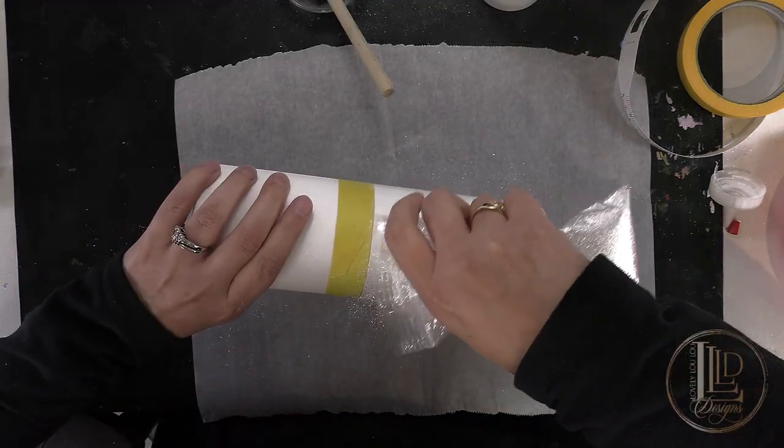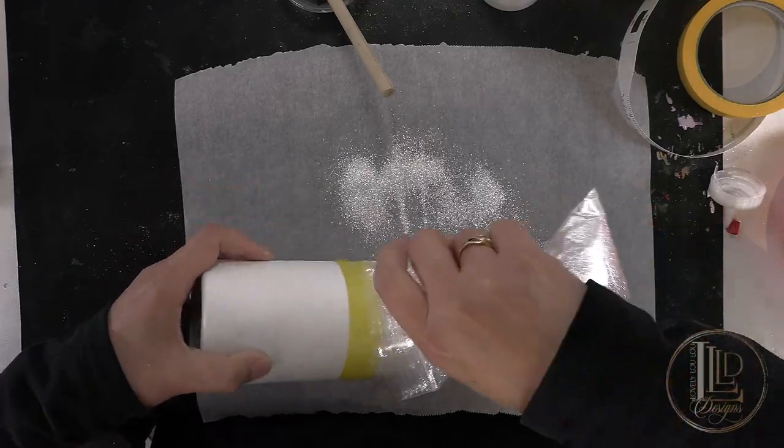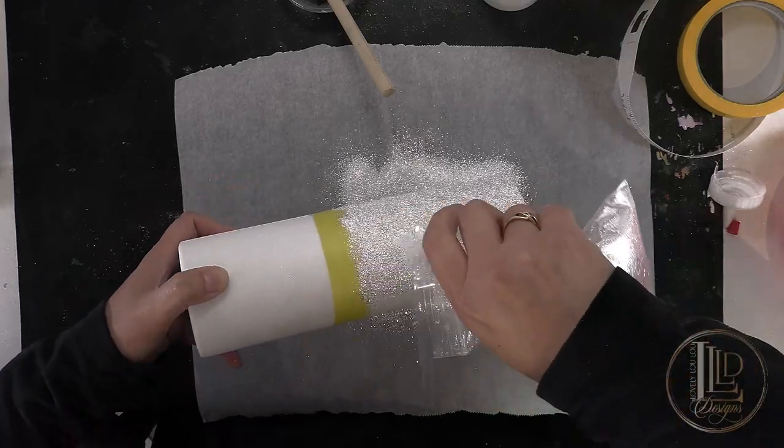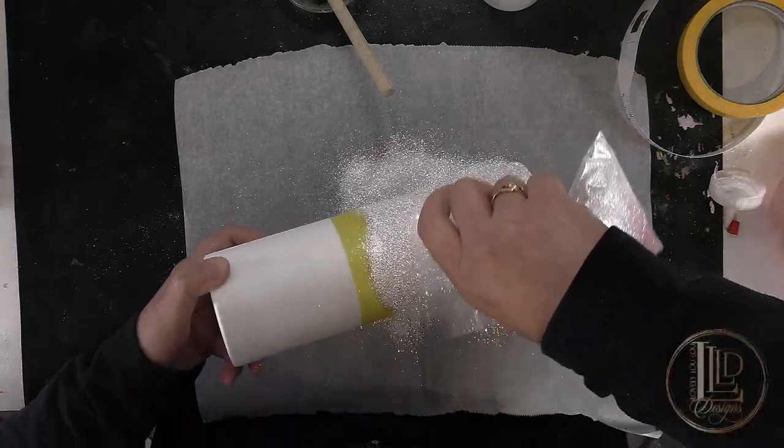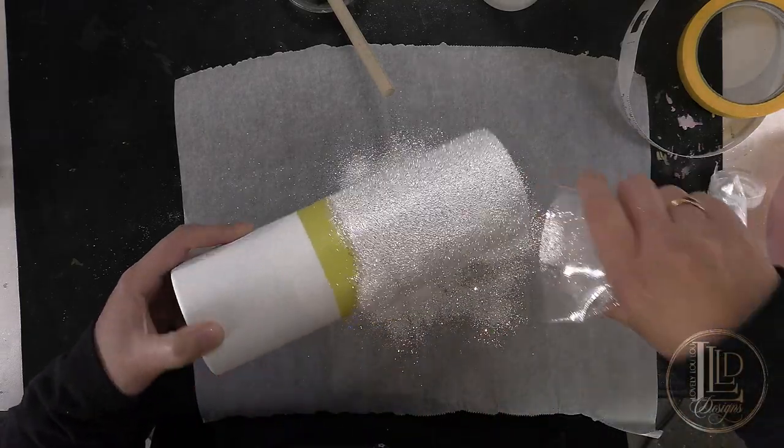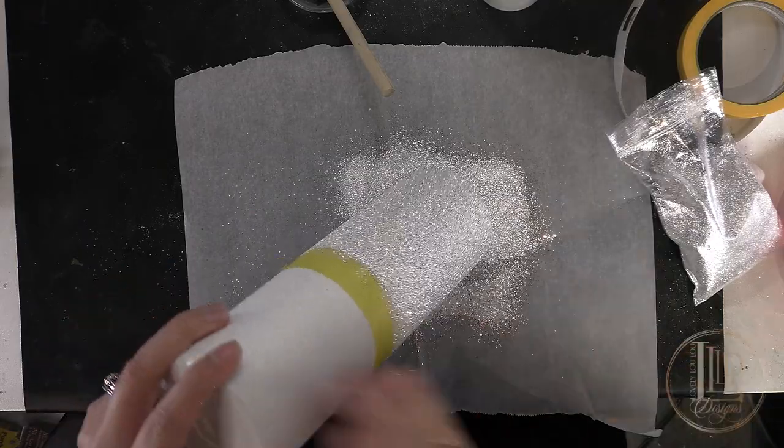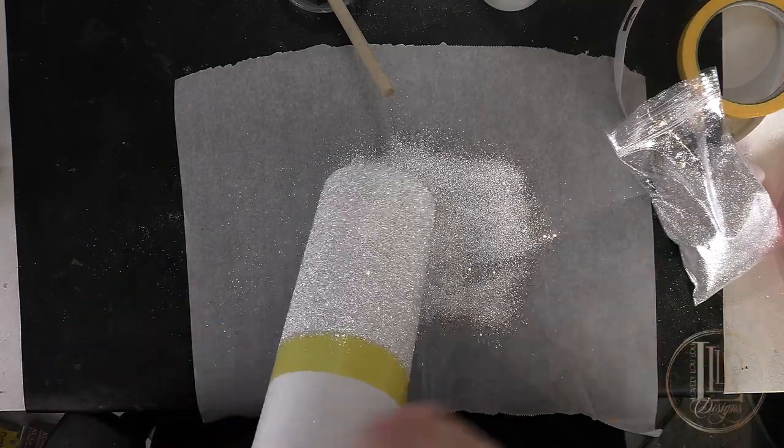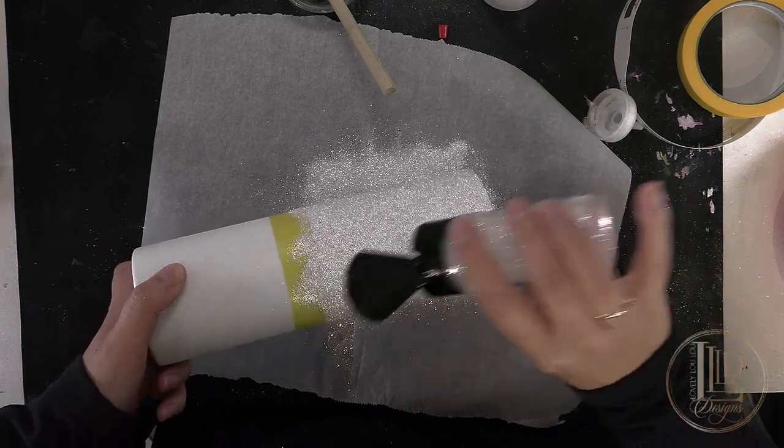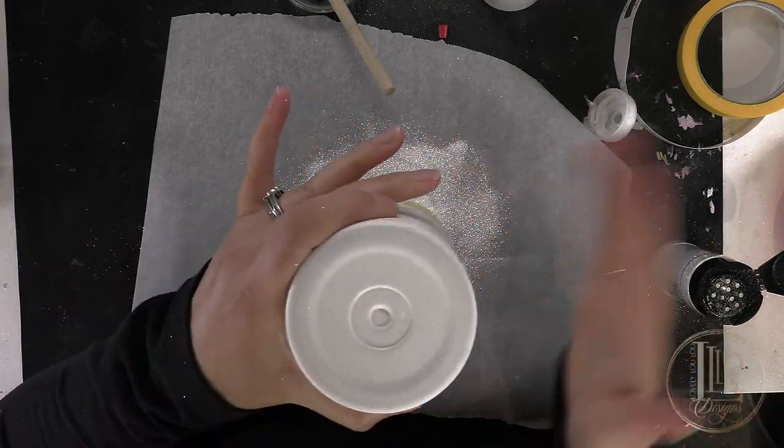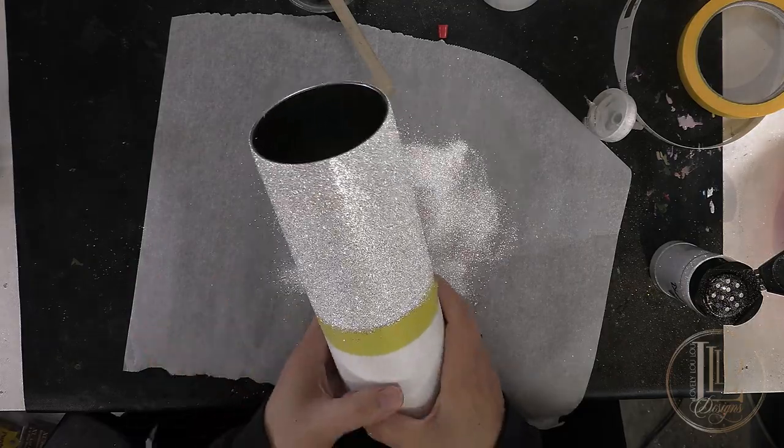You want to work fast since the Mod Podge dries very quickly when applied thinly. I'm going to start by applying my coarser cut of glitter, which is the fine cut, since I want this to be my primary glitter. After I apply the fine cut, I tap my tumbler to allow any excess glitter to fall off and then apply the extra fine cut to help fill in any gaps in the glitter. I will now set my tumbler aside and let it dry for approximately half an hour.